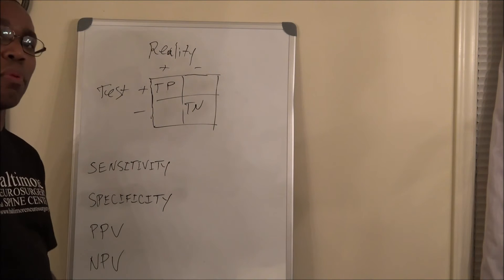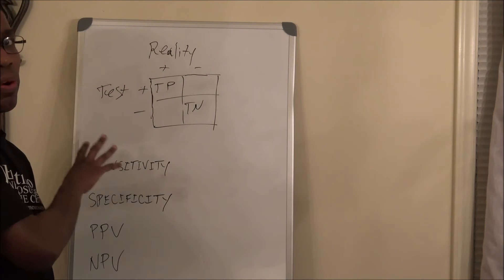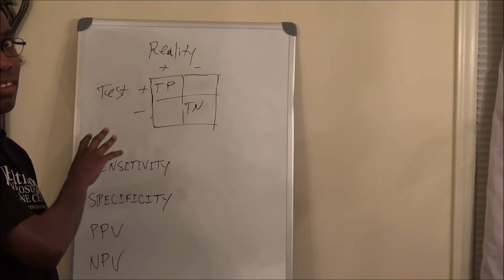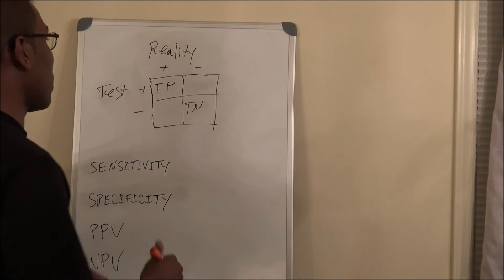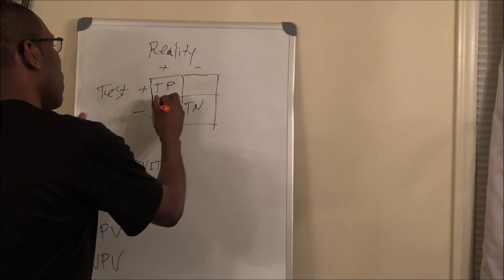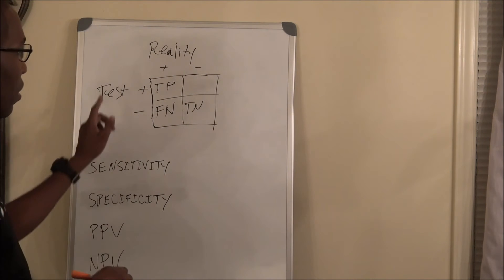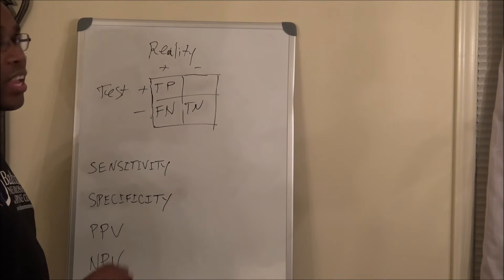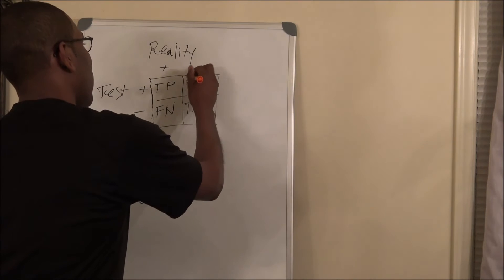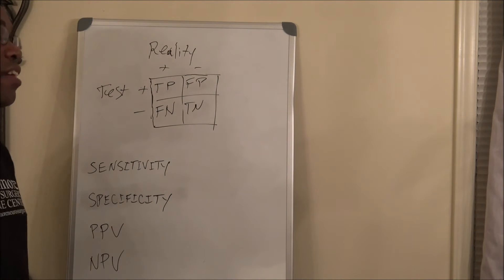When filling out the other two boxes, it's important to remember that the test is the most important aspect of those boxes. So when you have a negative test and a positive reality, that means you're going to have a false negative, because the test is the most important. And for the positive test and the negative reality, that means you're going to have a false positive, because once again, the test is the most important.